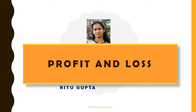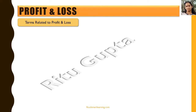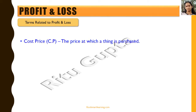Hello friends, in this session we will be talking about profit and loss and how they are used in our practical life. Let's first understand the terms related to profit and loss. First is the cost price, which is written as CP. Cost price is the price at which a thing is purchased — that is the cost to the person who is buying a product.